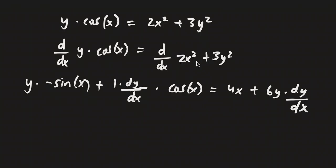Essentially, I took 2x squared, brought the 2 down — 2 times 2 is 4 — and then x to the power of 2 minus 1 which is just 1, so that becomes 4x.